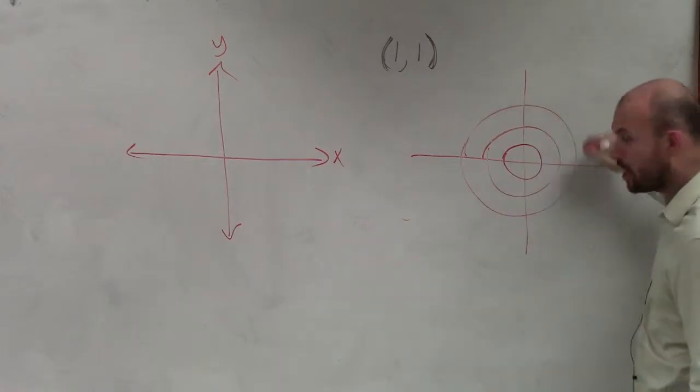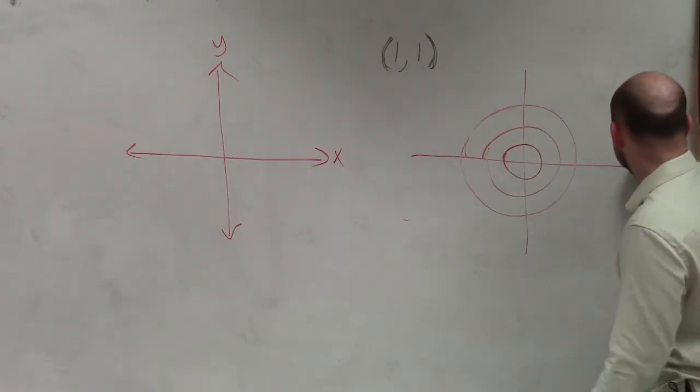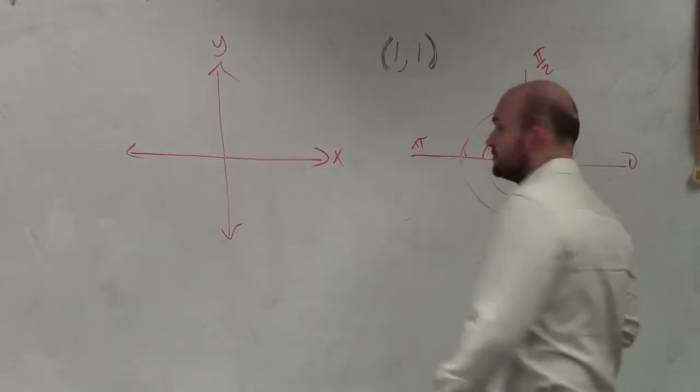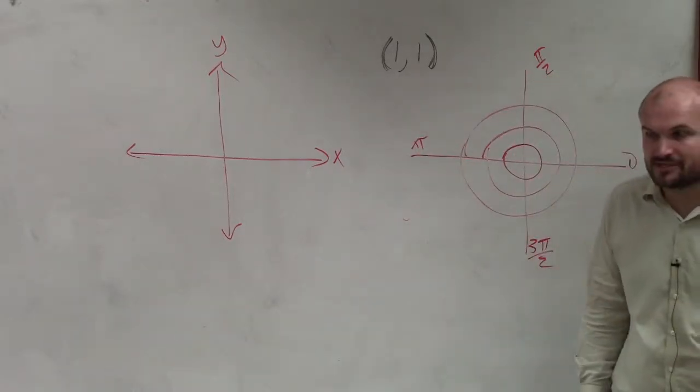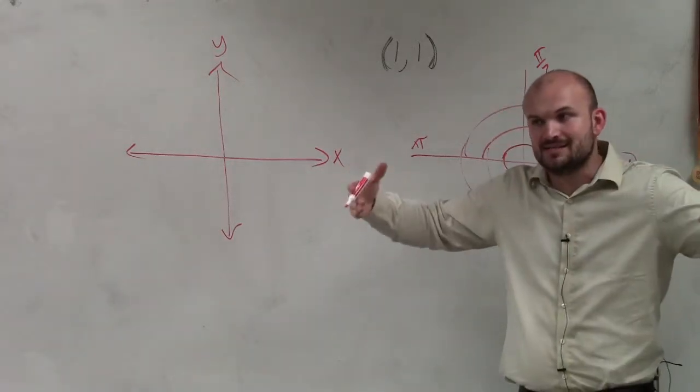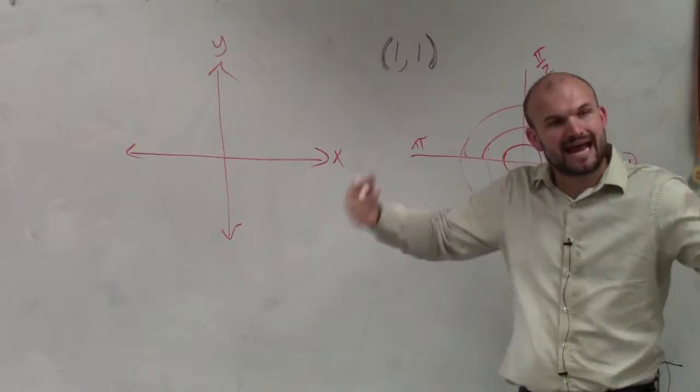Where this represents our r, and here's our thetas, which is 0, pi halves, pi, 3 pi over 2. So one thing that might be helpful, ladies and gentlemen, when we're using this, we're concerned about the radius, which is the hypotenuse, and theta.